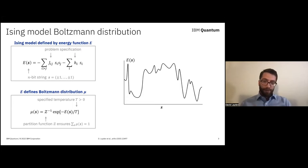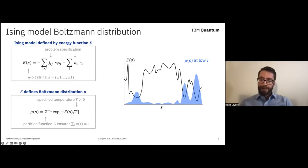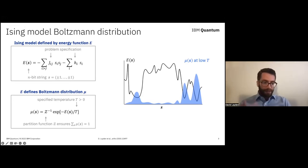The problem will be to sample from this distribution. At low temperature, the distribution is sharply peaked on the ground state — the global minimum, the lowest energy spin configuration. In the opposite limit of high temperature, the distribution instead approaches the uniform. The regime we'll mostly be interested in is the hard intermediate regime, in which the Boltzmann distribution has substantial support over a number of different low energy states that may be far from one another. I want to emphasize throughout that sampling is a related but distinct problem from optimization — we're not just interested in finding the global minimum.